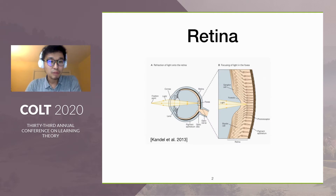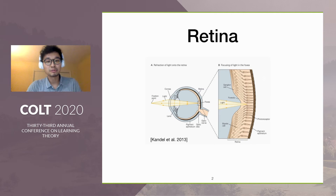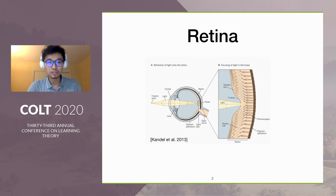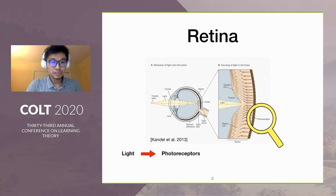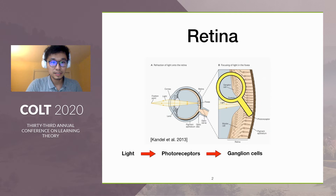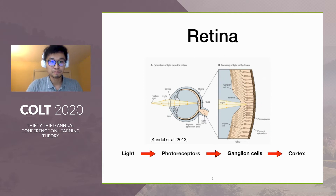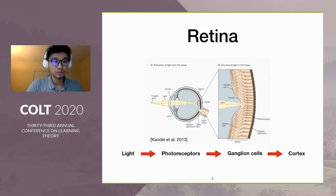The main biological object in this talk is retina. In hindsight, the retina can be viewed as a shallow circuit with the following structure. The inputs are lights, and it goes to the first layer, which are photoreceptors. The last layer is the ganglion cells, and the output goes to cortex. Let's give a more quantitative description.